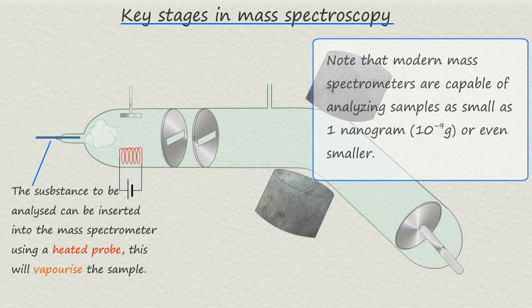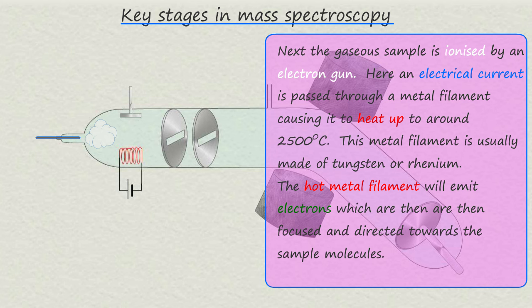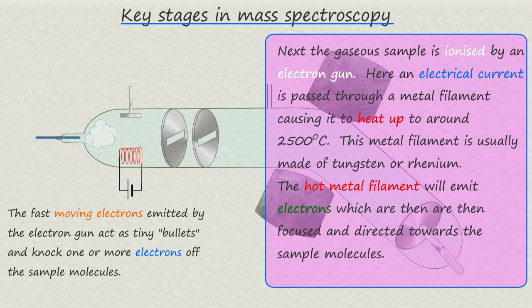The next step is the gaseous sample is ionized by an electron gun. Here an electrical current is passed through a metal filament causing it to heat up to about 2500 degrees Celsius.